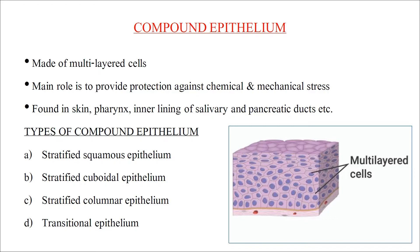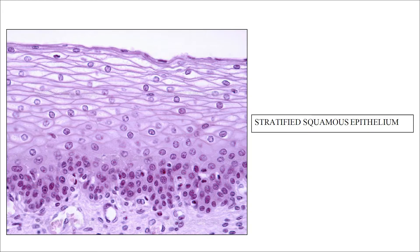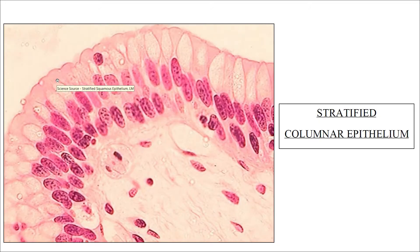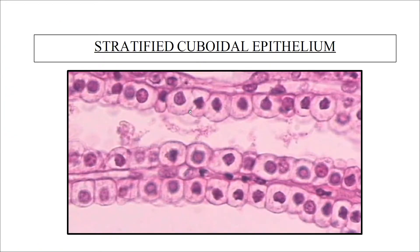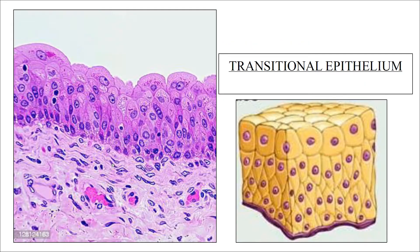The types of compound epithelium are stratified squamous epithelium, stratified cuboidal epithelium, stratified columnar epithelium, and transitional epithelium. Microscopic pictures show stratified squamous epithelium, stratified columnar epithelium with pillar-shaped cells, stratified cuboidal epithelium with cuboidal-shaped cells, and transitional epithelium.